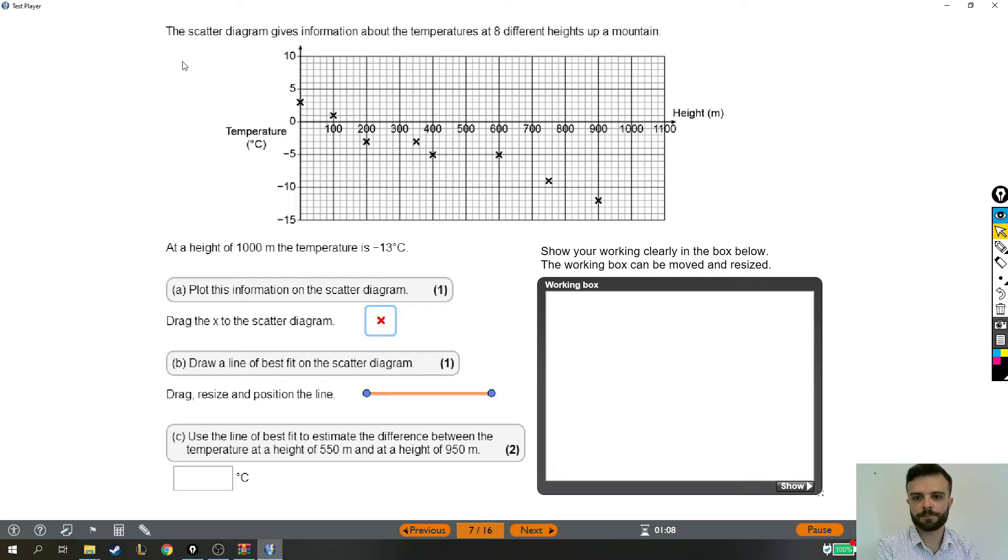So what it says is, the scatter diagram gives information about the temperatures at eight different heights up a mountain. At a height of 1,000 meters, the temperature is minus 13 degrees Celsius. Plot this information on the scatter diagram. Just to quickly mention how this scatter diagram works, if I pick this point, that tells us that at 900 meters, so if we go across this axis, which we can see is height, at 900 meters the temperature was minus 12. So that's how the graph works. Each of these crosses is the temperature at a certain height.